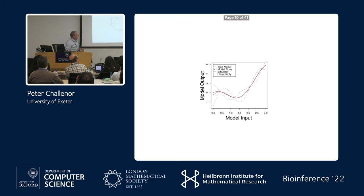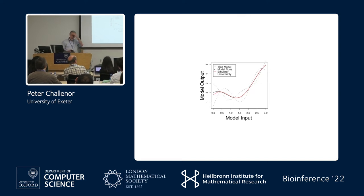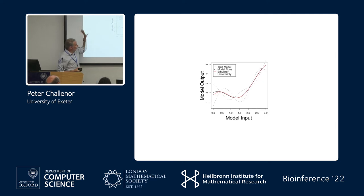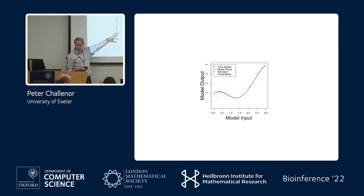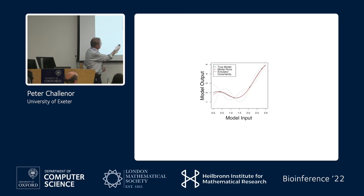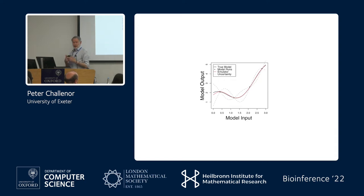If I now put the model back on, we've done pretty well — I didn't tell it anything about the structure of the model apart from those four numbers. These uncertainties allow us to say: my uncertainty is really big here, so I'm going to put another point there, and that will pull it in and the uncertainty will collapse. I can use the properties of having the uncertainty to guide where to evaluate my emulator.